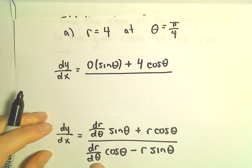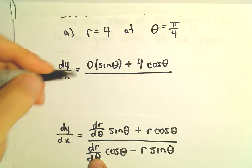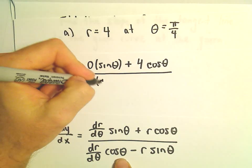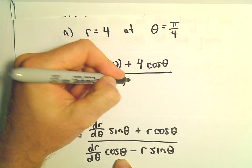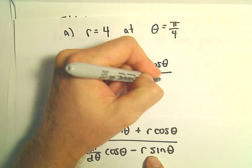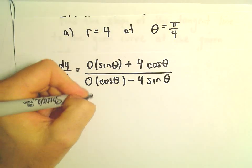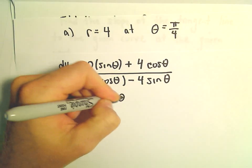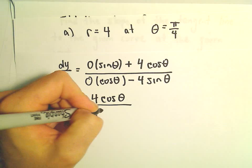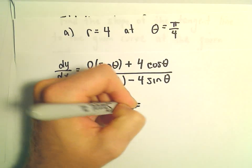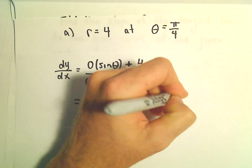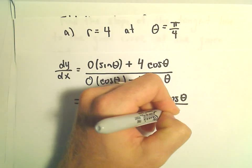Then we divide all of that by the derivative of r with respect to theta, which is going to be 0, times cosine theta, minus r times sine theta. Well, in the numerator we're just going to be left with 4 cosine theta. In the denominator, we'll have negative 4 sine theta. That's just negative cosine theta over sine theta.